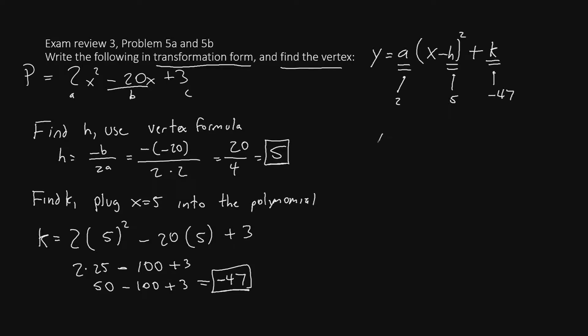So in transformation form we'll have y equals 2 times x minus 5 squared minus 47. That answers the first part of the question. Now our vertex is just going to be h comma k which we already have. We know h is 5 and k is negative 47. So our vertex will be 5 comma negative 47.